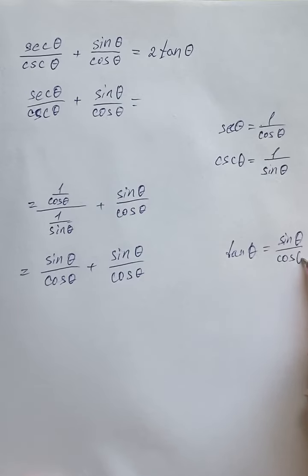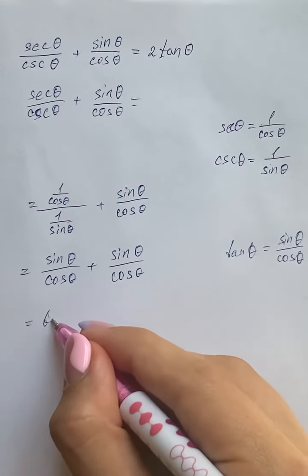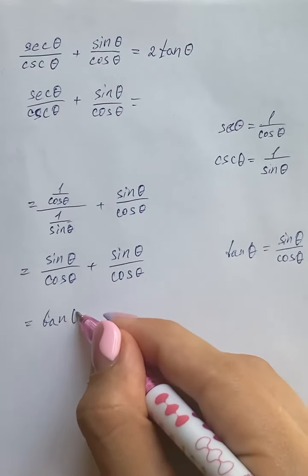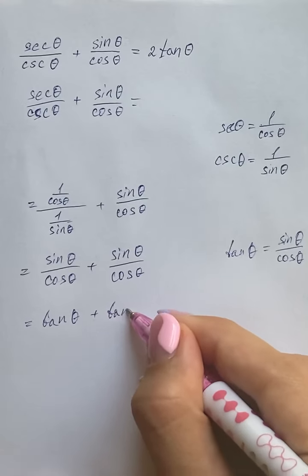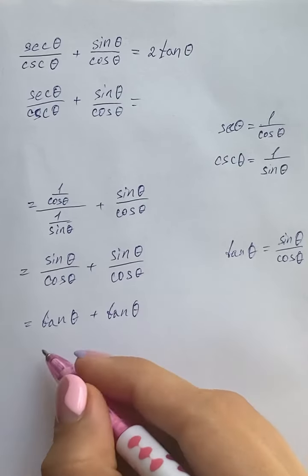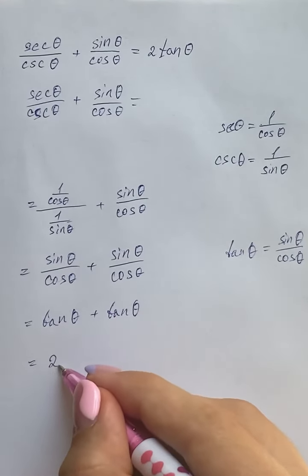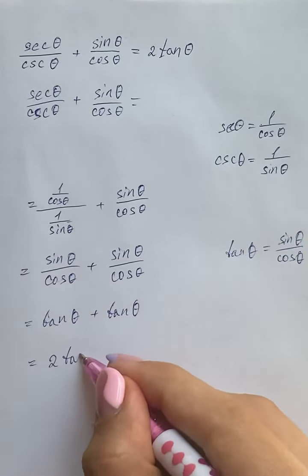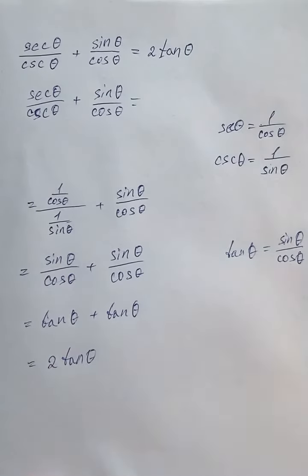So we have tangent of theta plus tangent of theta, which equals two tangent of theta. That gives us the right-hand side, and the identity is proved.